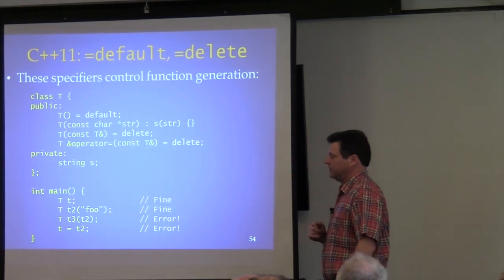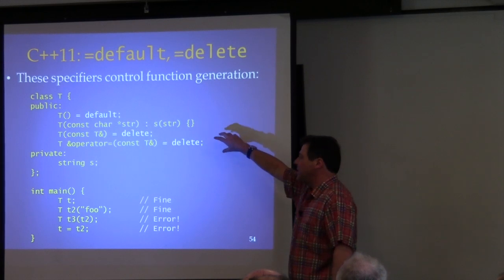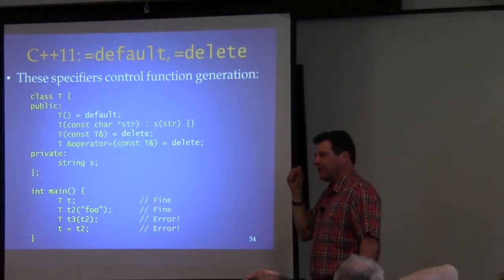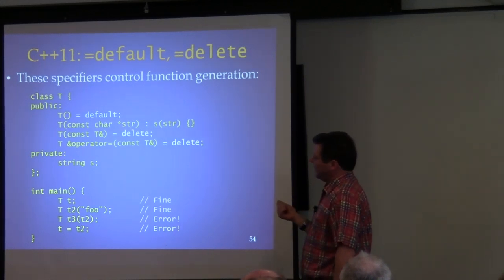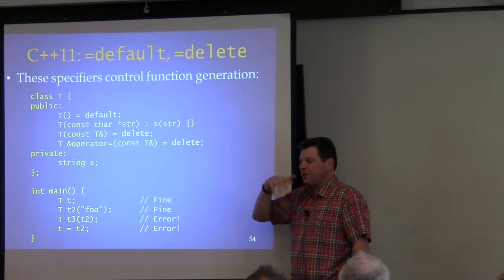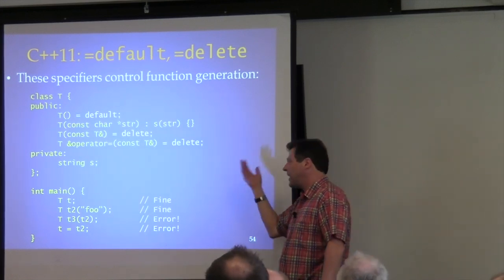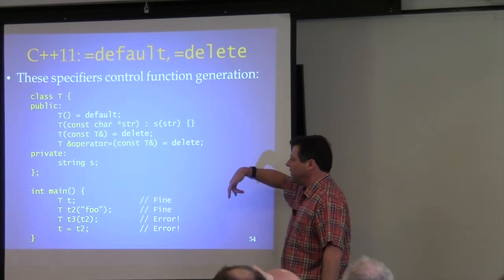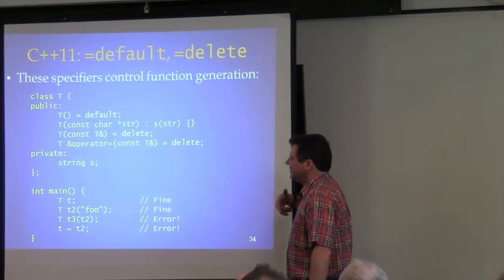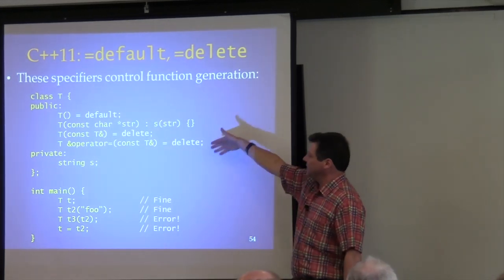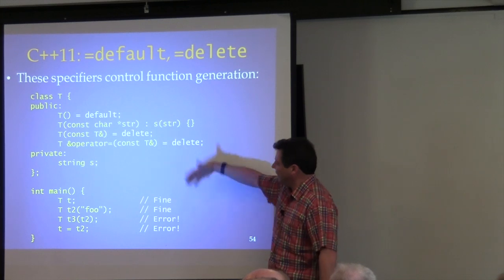The assignment operator is different — you can write one for a derived class even if the base class doesn't have one. But making base class copy operations deleted basically means the compiler can't generate those for the derived class either, because it won't be able to call the base class versions. Why you'd want a derived class to have an assignment operator in this case is beyond good design, but technically it's legal.